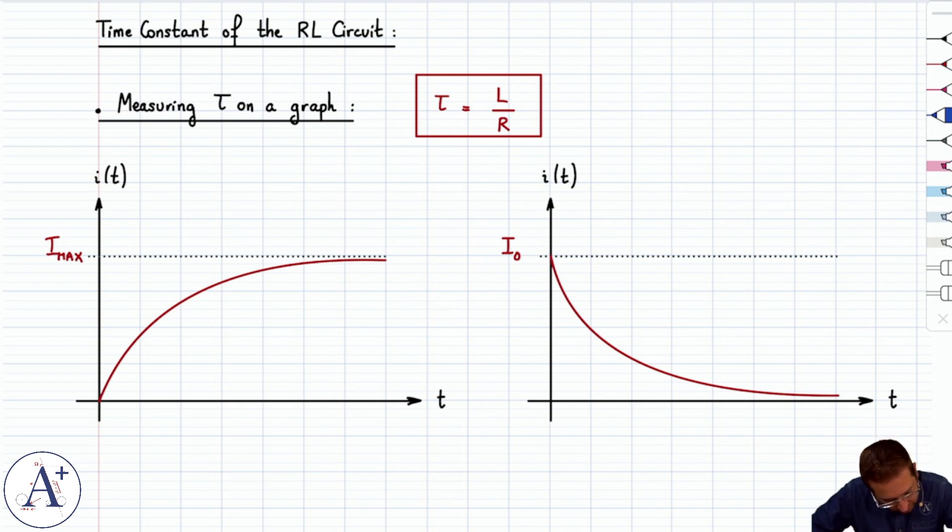So in the first case, you would take two-thirds of Imax, which you can read off of the graph, and you would figure out the corresponding amount of time. And that there would be tau.